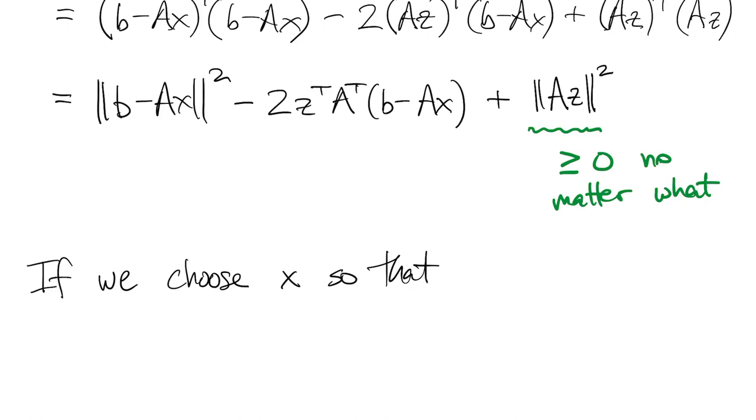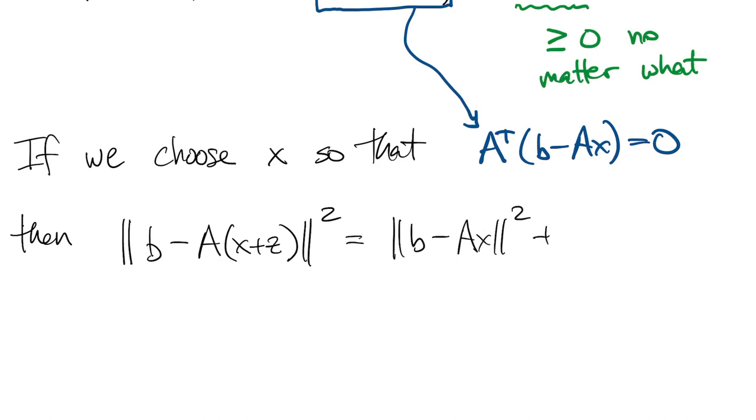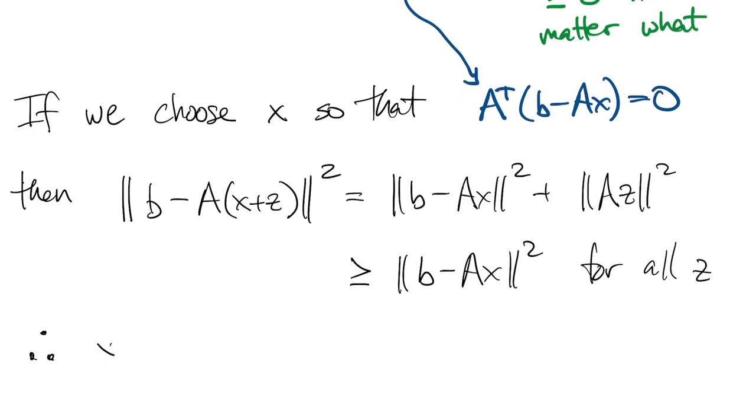So now if we look at this middle term, and we choose x to make this part zero, then that goes away, and this thing that I started out computing is really just the sum of two separate norms squared. So that's greater than or equal to norm of b minus a x squared, no matter what z is.